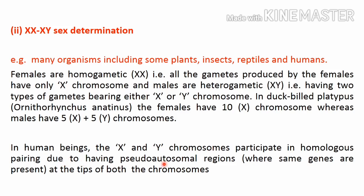In human beings, the X and Y chromosomes participate in homologous pairing, which takes place at the time of meiosis during gamete formation. At this time, homologous chromosomes pair and there is an exchange of genetic material. The sex chromosomes X and Y assemble together, and although the X chromosome is quite different from the Y chromosome, certain regions of both chromosomes show homology, which is why homologous pairing takes place between them.